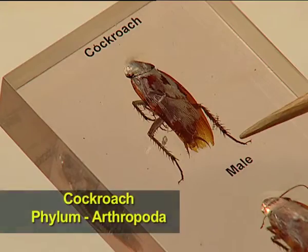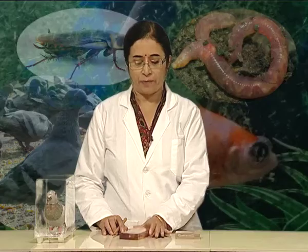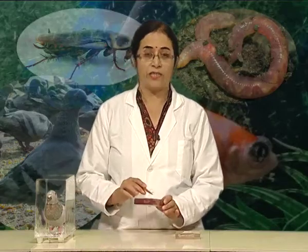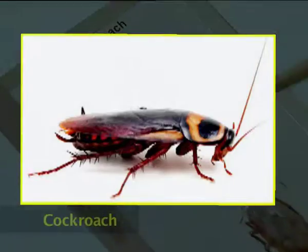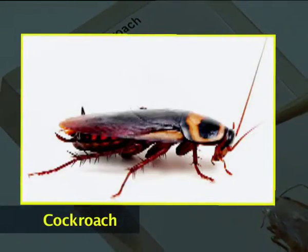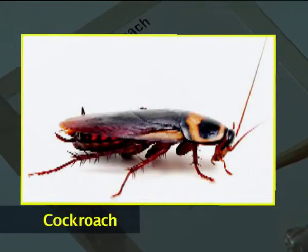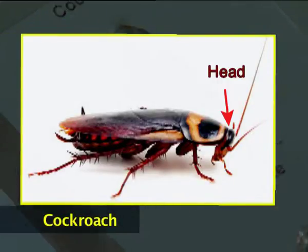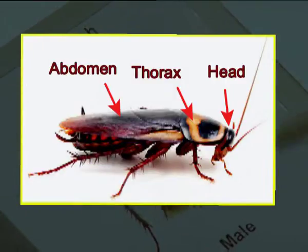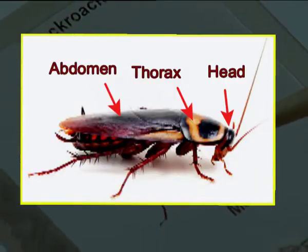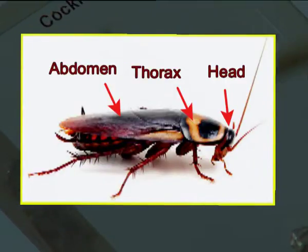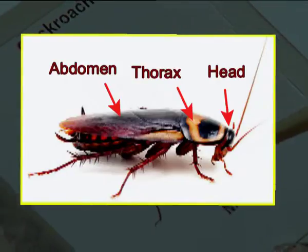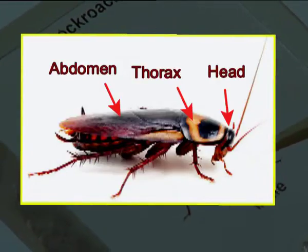The second example is cockroach, which belongs to phylum Arthropoda and class Insecta. It is characterized by jointed feet and a segmented body. The body of a cockroach is divided into head, thorax, and abdomen, and it is covered by chitinous appendages.